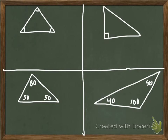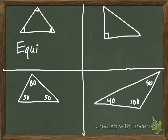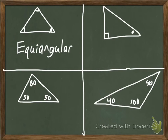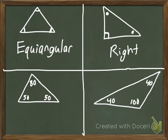We're going to start in the top left. We see that in this triangle, all the angles are indicated as congruent — it's the same concept as with equilateral. This is the equiangular triangle. In the top right, we don't know about two of the angles, but we do know that one angle is a right angle. If there's a right angle, it's a right triangle.